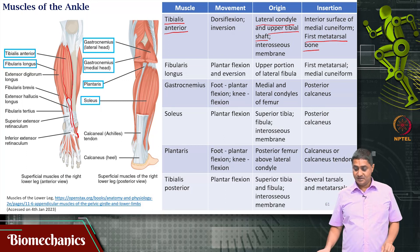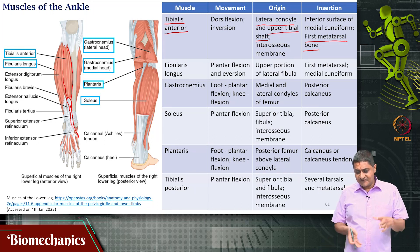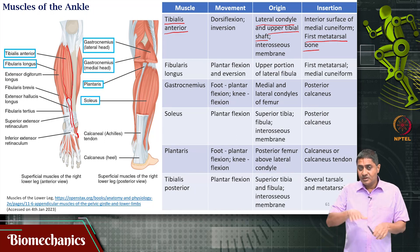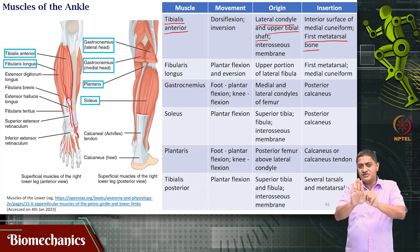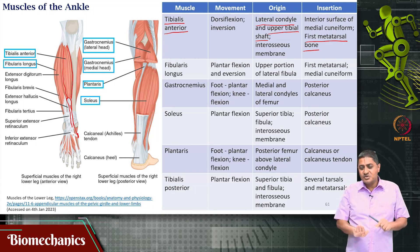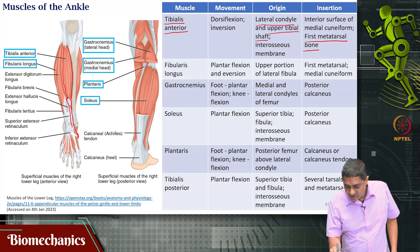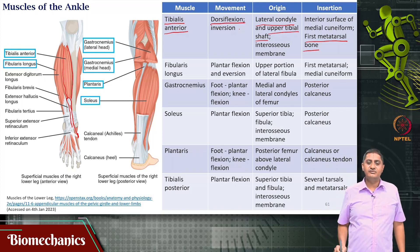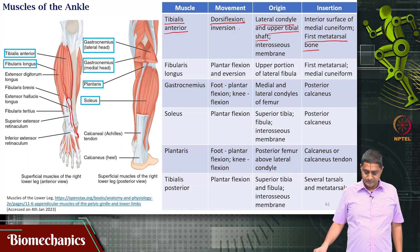If the muscle is attaching on the front side of the foot and it contracts, it pulls the foot upward — if this is the foot and it is attaching at the big toe side and pulling, the foot goes up, which is called dorsiflexion. That is dorsiflexion of the foot, occurring at the ankle joint.